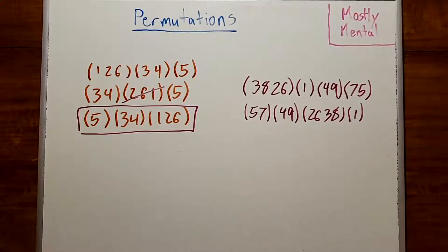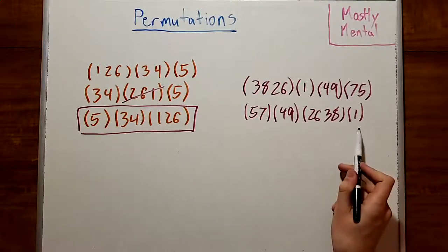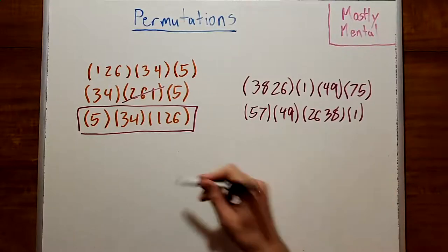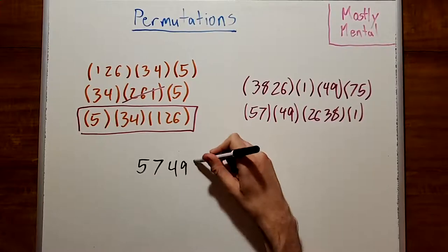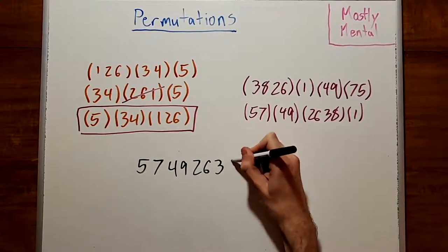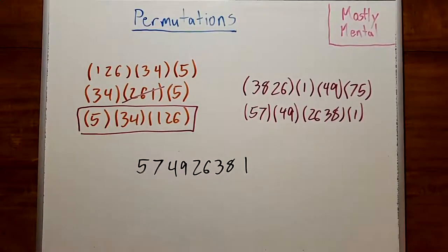Well, that's a strange order. Why would we choose that? Well, it has the nice property that the parentheses are redundant. So what that means, if we were given this without the parentheses in it, so 5, 7, 4, 9, 2, 6, 3, 8, 1, we could put the parentheses back in.